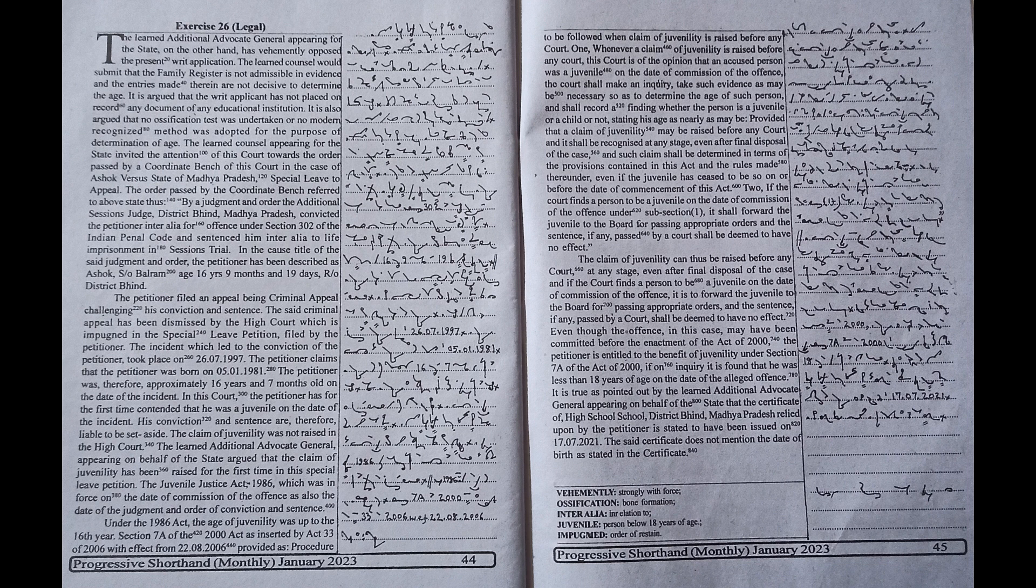It is true as pointed out by the learned additional advocate general appearing on behalf of the state that the certificate of high school, District Bind Madhya Pradesh relied upon by the petitioner is stated to have been issued on 17th July 2021. The said certificate does not mention the date of birth as stated in the certificate.